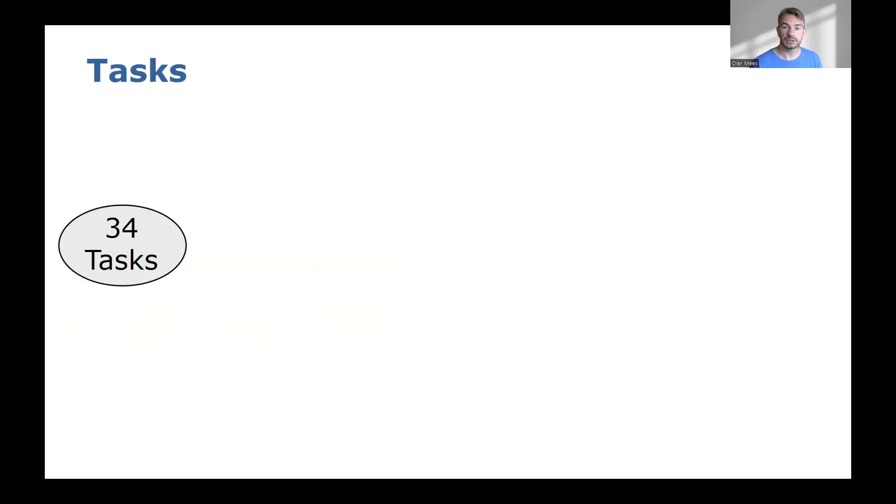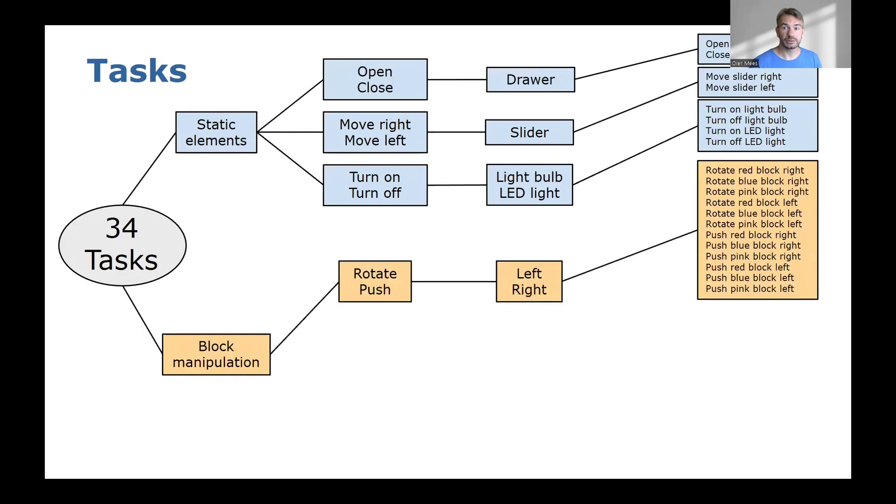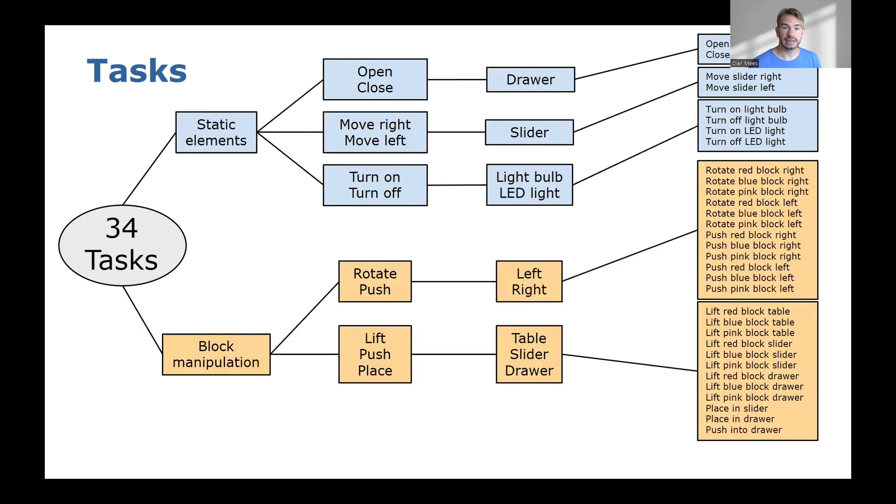We define 34 specific tasks that can be achieved in each one of the environments, such as opening a drawer, moving a sliding door, turning on a light, and manipulating three differently colored blocks. The environments automatically detect the task completion, which can be used as a sparse reward for goal-conditioned reinforcement learning.